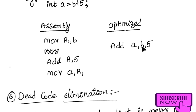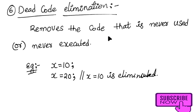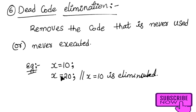The sixth type is dead code elimination. It removes code that is never used or never executed. For example, if you write x = 10 and then immediately write x = 20, the first assignment x = 10 is meaningless because it gets overwritten. So x = 10 is dead code and can be eliminated. This is called dead code elimination.